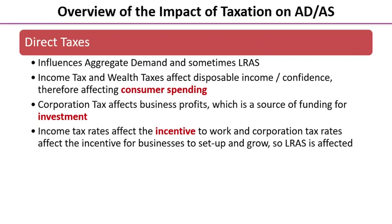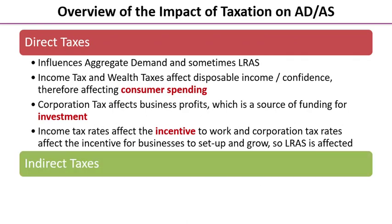Corporation tax directly affects investment, which is also a component of aggregate demand. Moving on to the impact on aggregate supply: income tax rates and corporation tax rates affect incentives. Income tax rates directly affect the incentive to work; corporation tax rates directly affect the incentive for businesses to set up, grow, and invest — so that affects long-run aggregate supply as well.